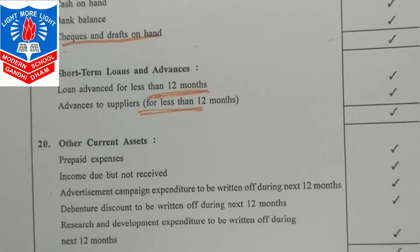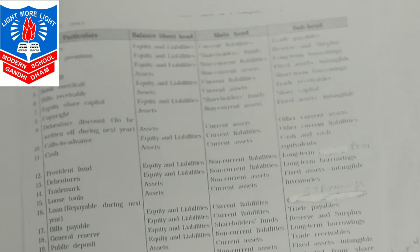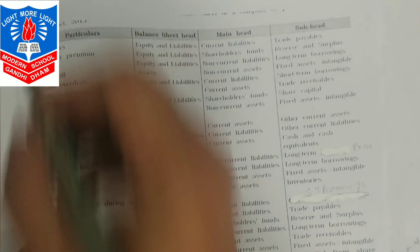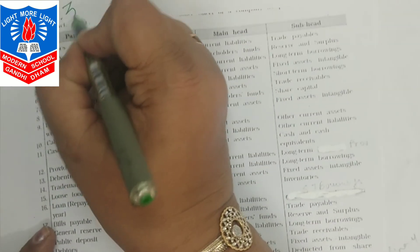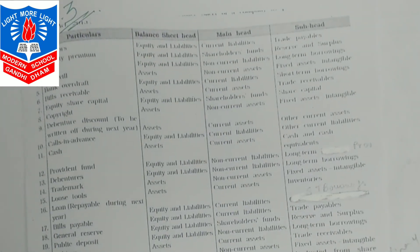So in this way, our complete 12-pointer balance sheet knowledge has been covered. Now we are going to do one classification sum from your textbook — question number 3 — to understand the classification practically.